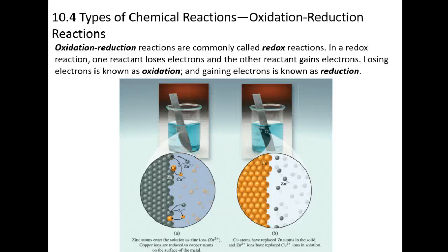Okay, so we just talked about double replacement reactions, and the two types of double replacement reactions are precipitation and acid base. Now I'm going to talk about a whole other set of reactions called redox reactions, or oxidation reduction. For short, they call them redox.